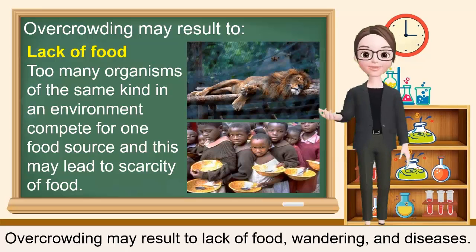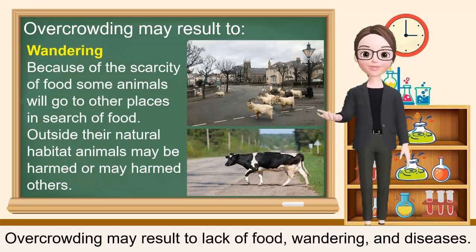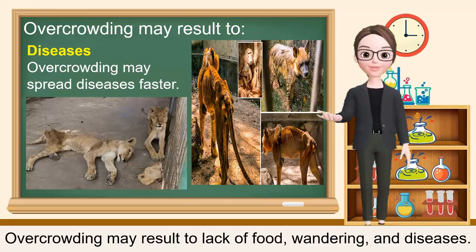Lack of food: too many organisms of the same kind in an environment compete for one food source and this may lead to scarcity of food. Wandering: because of the scarcity of food, some animals will go to other places in search of food. Outside their natural habitat, animals may be harmed or may harm others. Diseases: overcrowding may spread diseases faster.